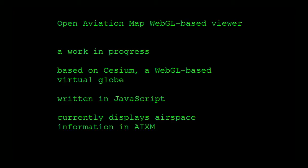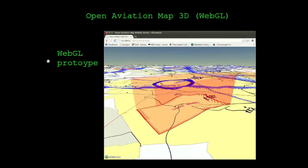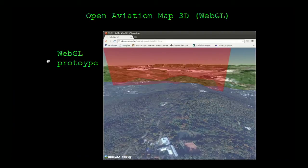We have a prototype for an additional representation which is a WebGL-based viewer. It's based on Cesium, which is a WebGL-based virtual globe environment written in JavaScript using OpenGL. This is the bitmap render map we saw earlier, and this is an early prototype screenshot of the WebGL-based thing - you can see the mountains and the airspace in 3D. And this is the same thing with satellite imagery underneath.